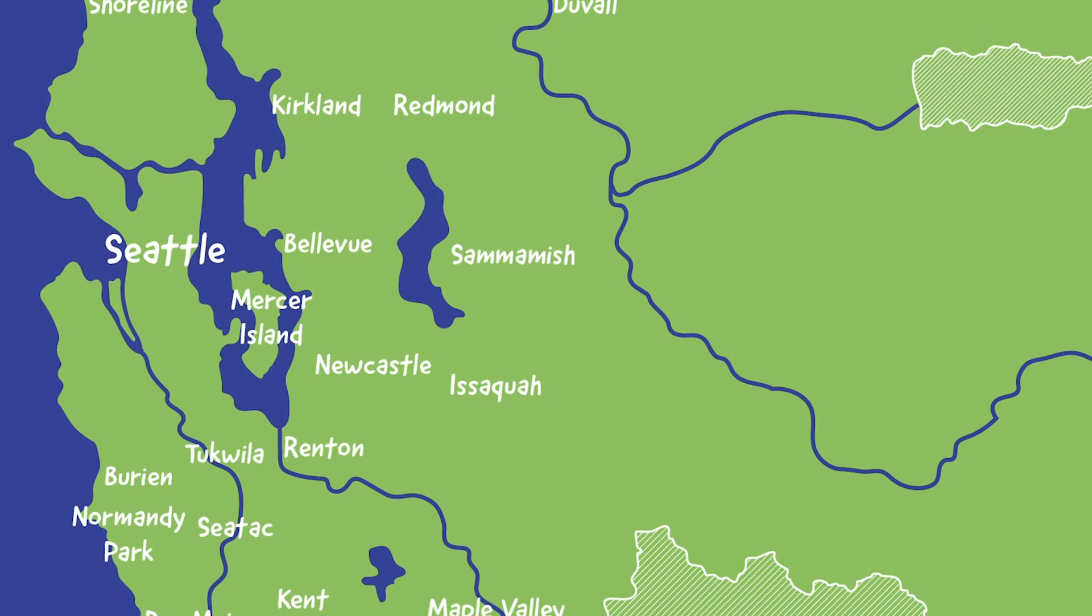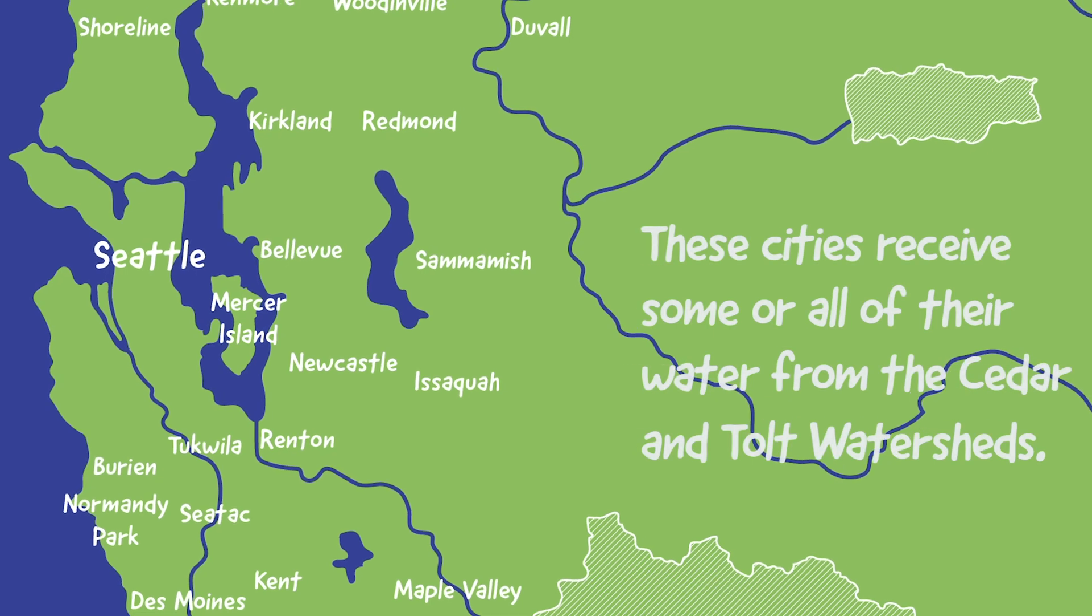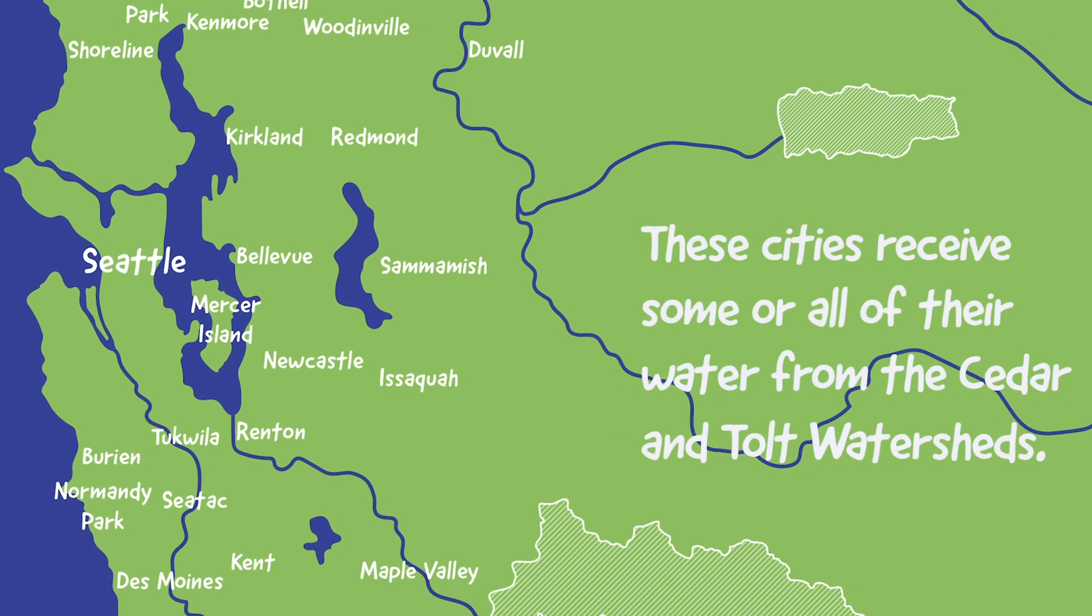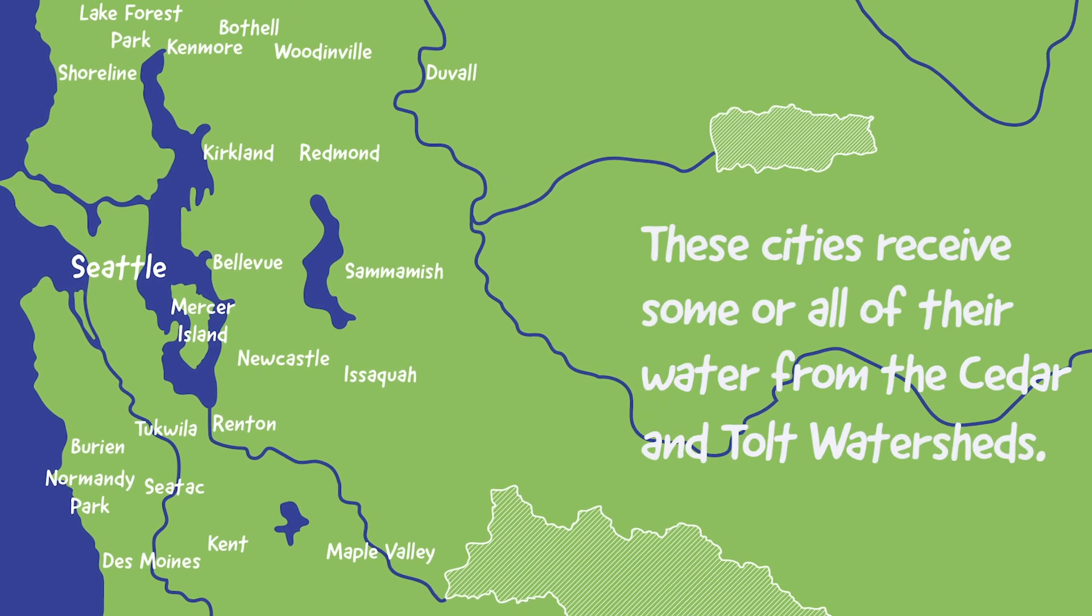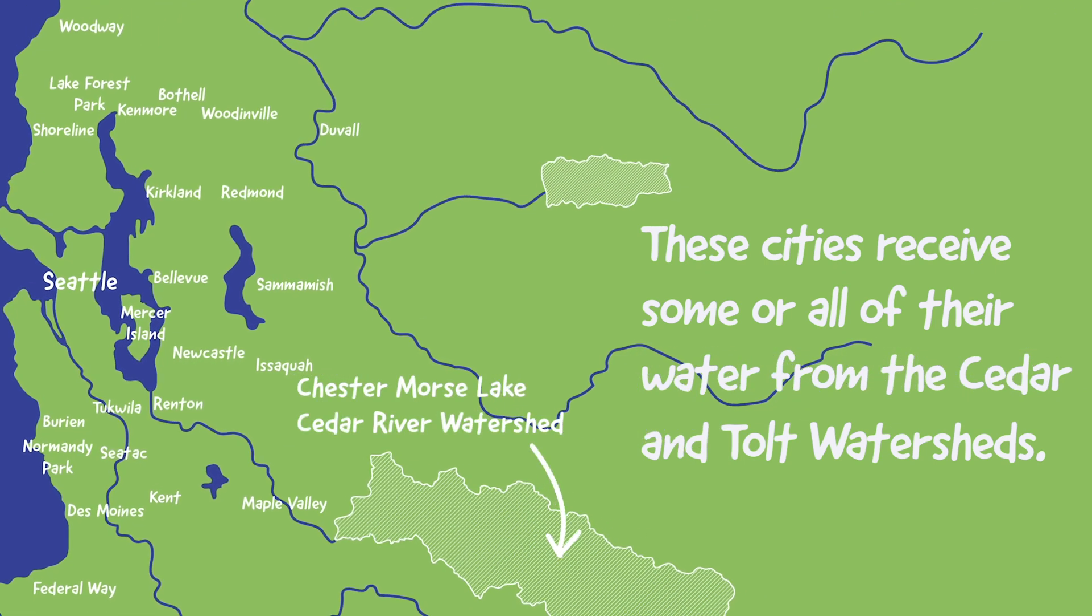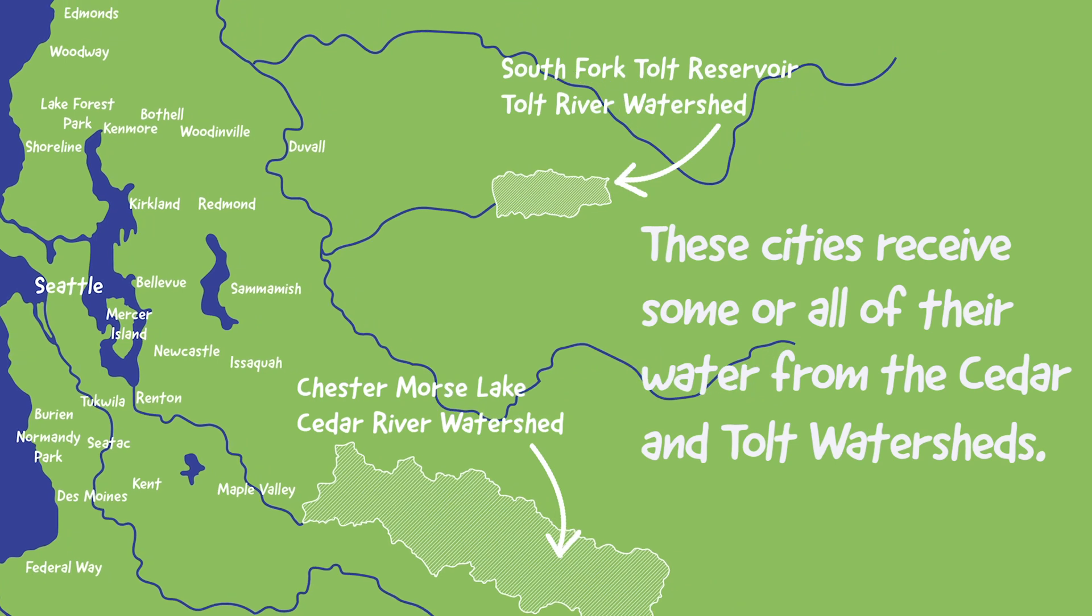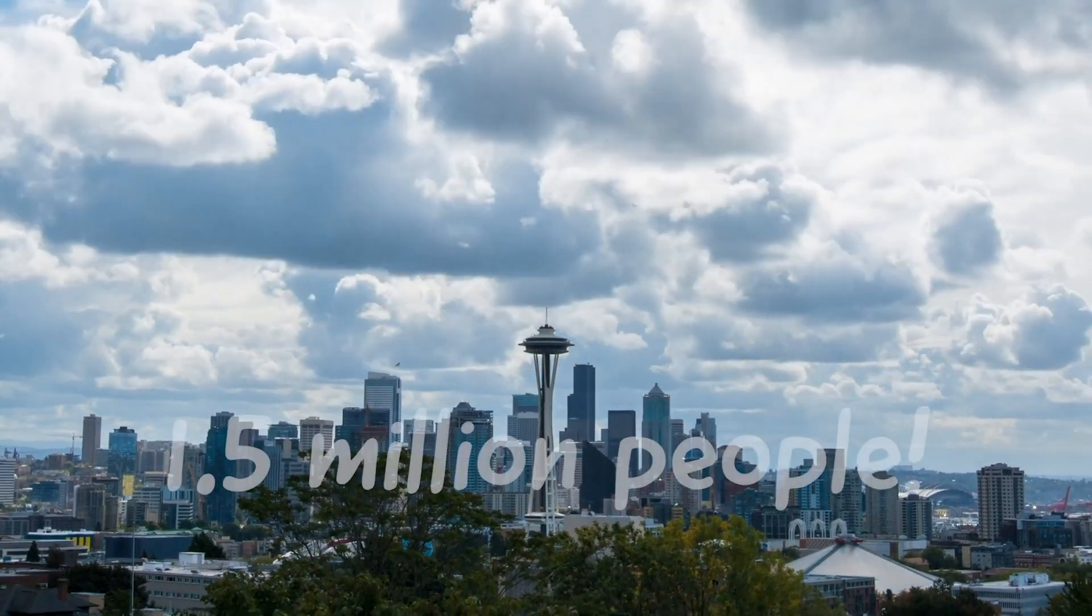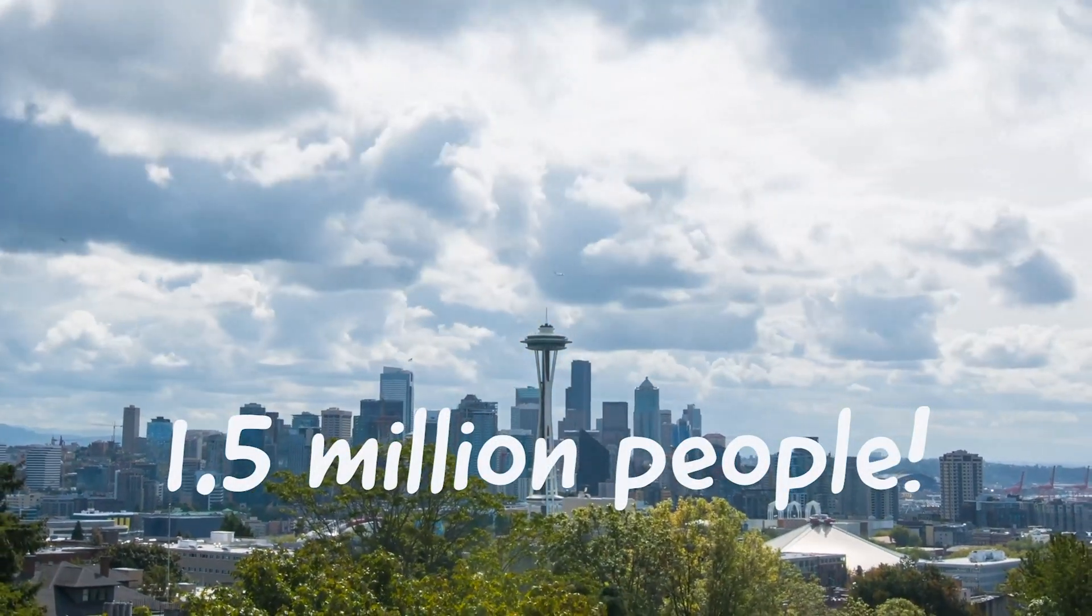Chances are, if you live in the greater Seattle area, your water comes from one of two pristine lakes in the Cascade Mountains. These lakes are called Chester Morris Lake, which is in the Cedar River watershed, and the South Fork Tolt Reservoir, which is in the Tolt River watershed. Together they provide reliable clean water for 1.5 million people, maybe even you.